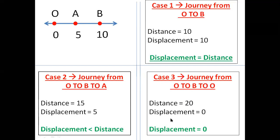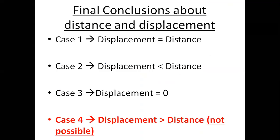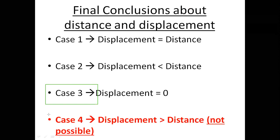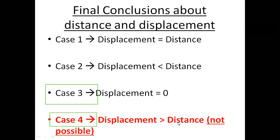We have taken ample information. You are not supposed to write down all this — it is just for understanding one particular question. In the exam, these two questions are asked based on these cases. They will ask what is the relation between distance and displacement. Displacement can be equal to distance (case 1), it can be less than that, and sometimes displacement is 0 when the initial and final position is the same. Case 4 — displacement greater than distance — this condition is never possible. Displacement cannot be greater than distance in any case. Do you agree that displacement cannot be greater than distance?